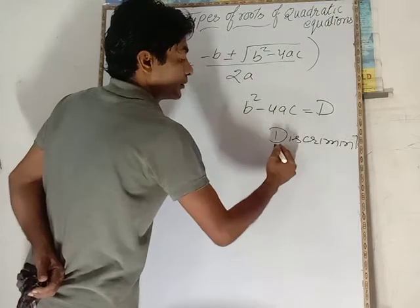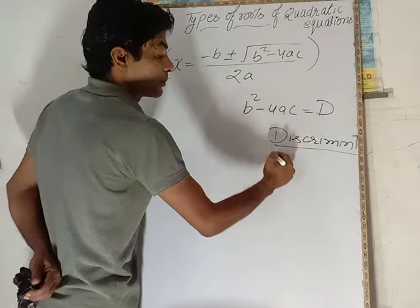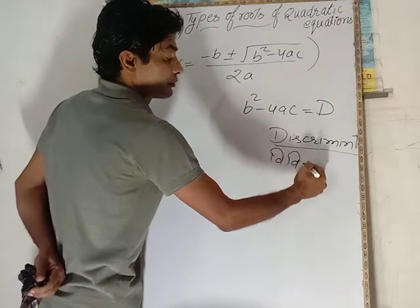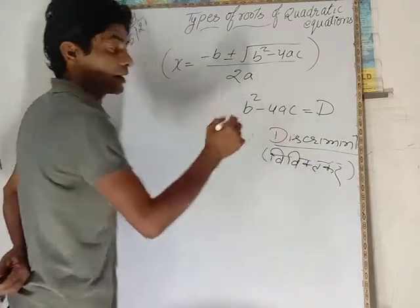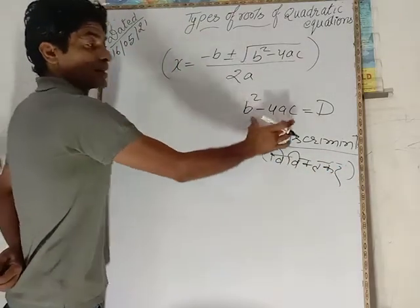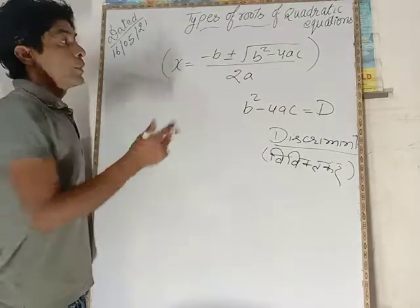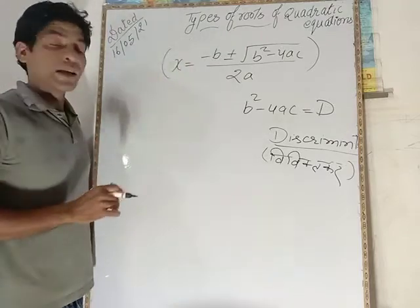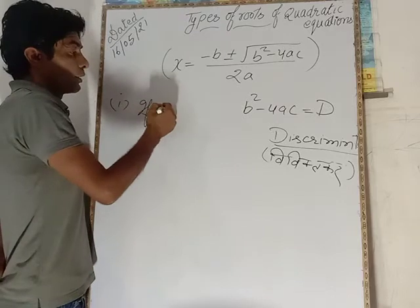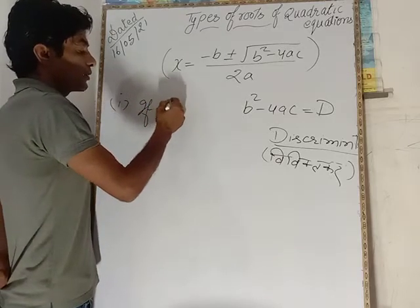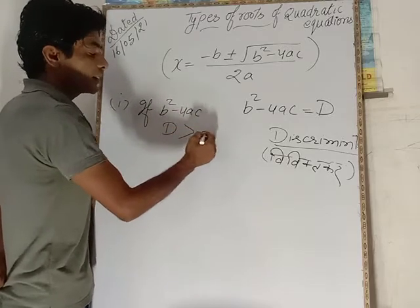This discriminant is the main thing. From the discriminant, you can know what type of roots the quadratic equation is having. First, if b squared minus 4ac, means discriminant, is greater than 0...